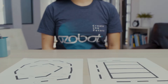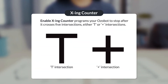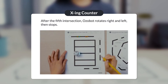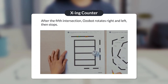The first color code you'll focus on is the enable crossing counter. This code programs your Ozobot to stop after it crosses five intersections, either T or plus intersections. After the fifth intersection, Ozobot rotates left and right, then stops.